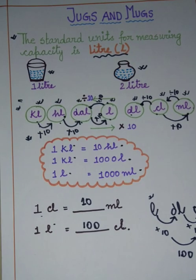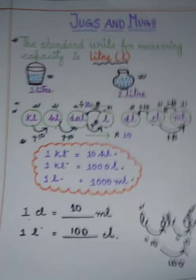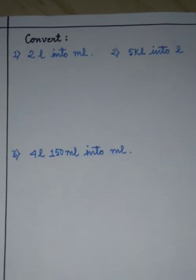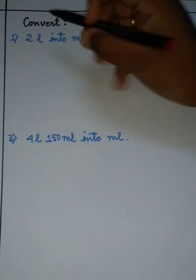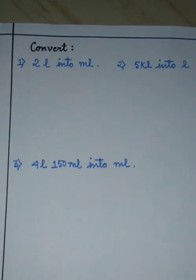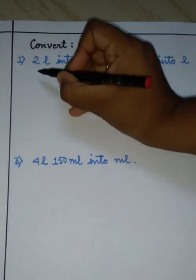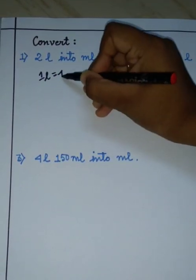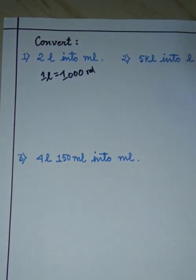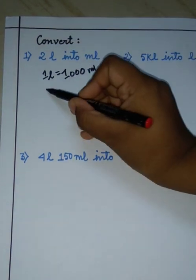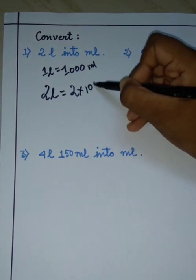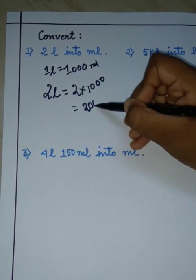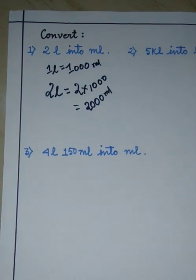Now we will go to the next page for conversion sums. The first sum: convert 2 litre into millilitre. We know 1 litre equals 1000 millilitre. So 2 litre equals 2 into 1000, that means 2000 millilitre. This is how we do this sum.